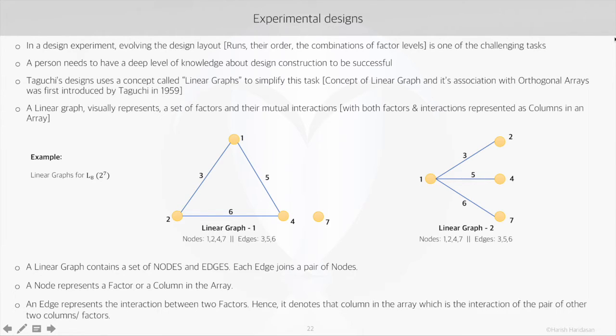The linear graphs are standard for each array, like for L8 orthogonal array, these are the two linear graphs. These nodes 1, 2, 4 and 7,